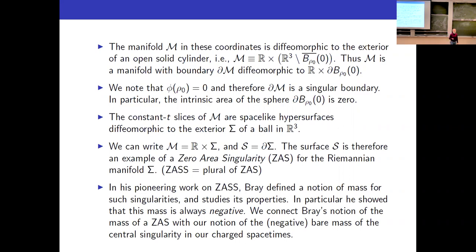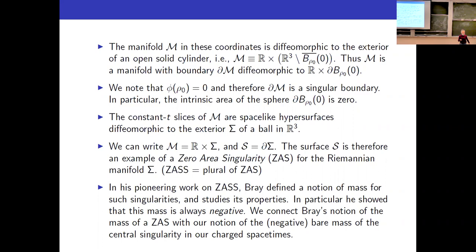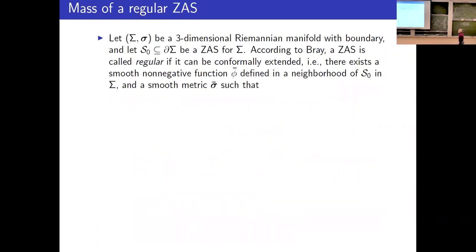In his work, Bray defined a notion of mass for these singularities. He showed that you can attach a concept of mass to that sphere of zero area, and that this mass is always negative. When I saw that I jumped up and said, this is what we need — if you're looking for negative bare mass, these zero-area singularities have negative mass. Bray's work is general, with no need for spherical symmetry, and he has a very nice description for the regular case.